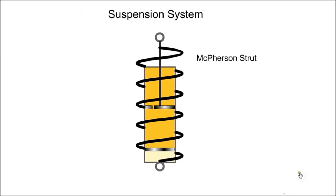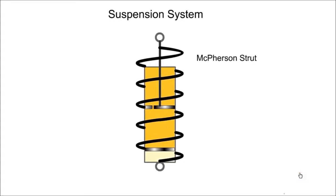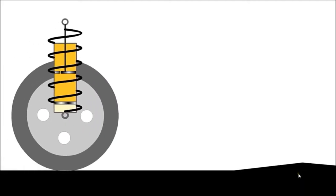A spring and damper are often combined in one unit called a McPherson strut. Here we see the McPherson strut in operation. It provides comfort for the occupants and maintains the wheel in contact with the road.